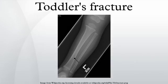Toddler's fractures, or childhood accidental spiral tibial fractures, are bone fractures of the distal part of the shin bone in toddlers and other young children. The fracture is found in the distal two-thirds of the tibia in 95% of cases, is undisplaced and has a spiral pattern. It occurs after low-energy trauma, sometimes with a rotational component.